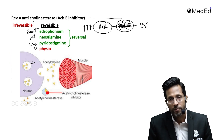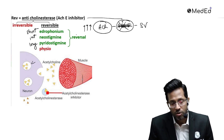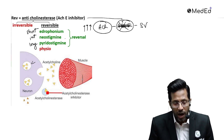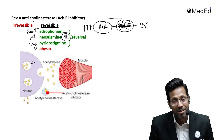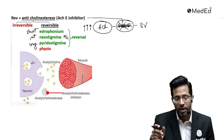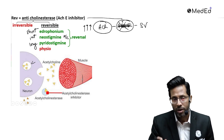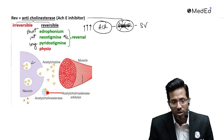Neostigmine is intermediate-acting and is preferred — that's the reason it's the most commonly used. Pyridostigmine is long-acting, edrophonium is short-acting. The fourth drug in the reversible anticholinesterase group is physostigmine, and this is not used for reversal.